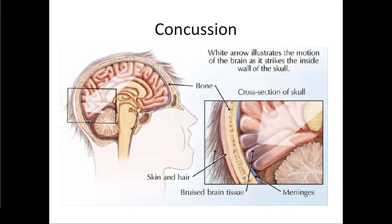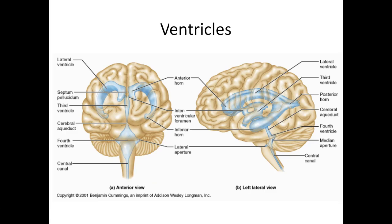Moving on from this, there's one more thing before we get to the brain itself, and that's the ventricles. These ventricles are full of cerebrospinal fluid. We have the lateral ventricles that come together into the third ventricle, down into the fourth ventricle, and then into the central canal, which actually runs through the spinal cord.